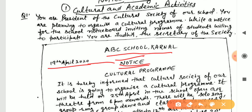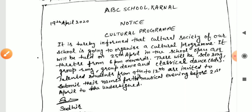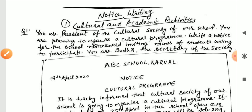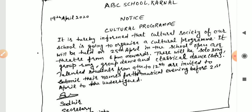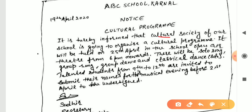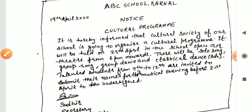Next is the content. Write: 'It is hereby informed that the Cultural Society of our school is going to organize a cultural event or cultural program.' You will mention the name of the society inside the content. After that, write when it will be held.